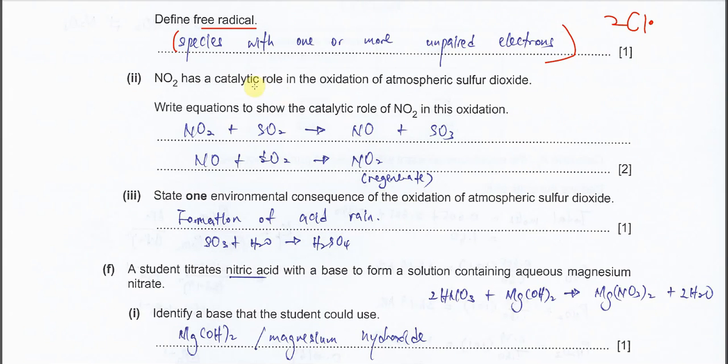Part two. NO2 has a catalytic role in the oxidation of atmospheric sulfur dioxide. Write equations to show the catalytic role of NO2 for this oxidation. The most important thing you need to show is NO2 must regenerate. We start from NO2, and this is used to oxidize SO2. SO2 now oxidizes to SO3, and NO2 will reduce to NO. Once NO forms, this will further oxidize - it will react with oxygen and get oxidized to NO2. Again, we start from NO2, and this NO2 will regenerate and catalyze again. This is the catalyst which can be regenerated.